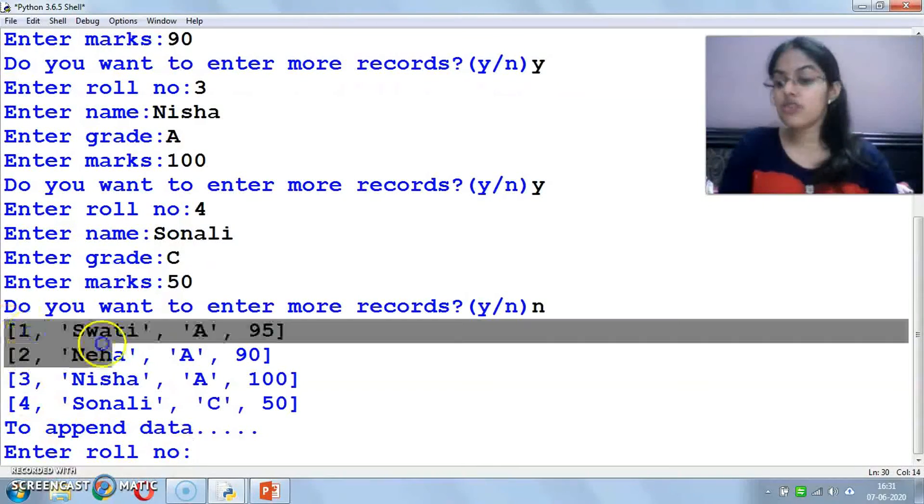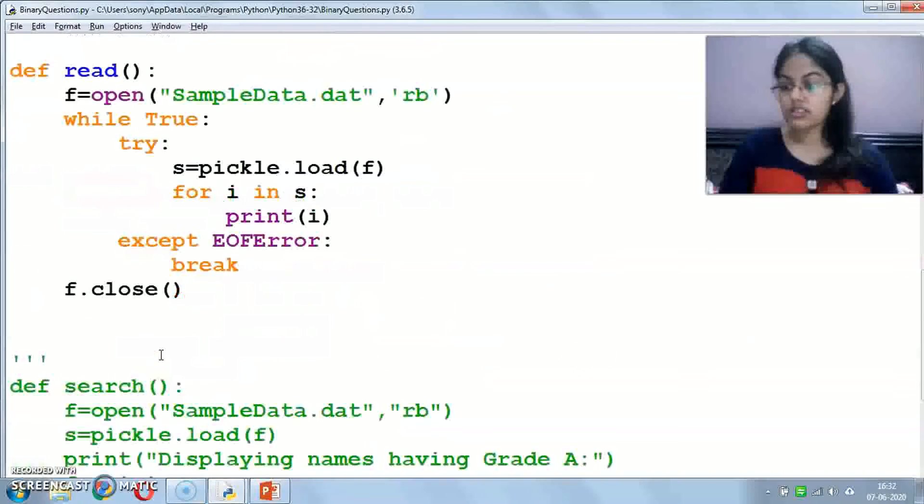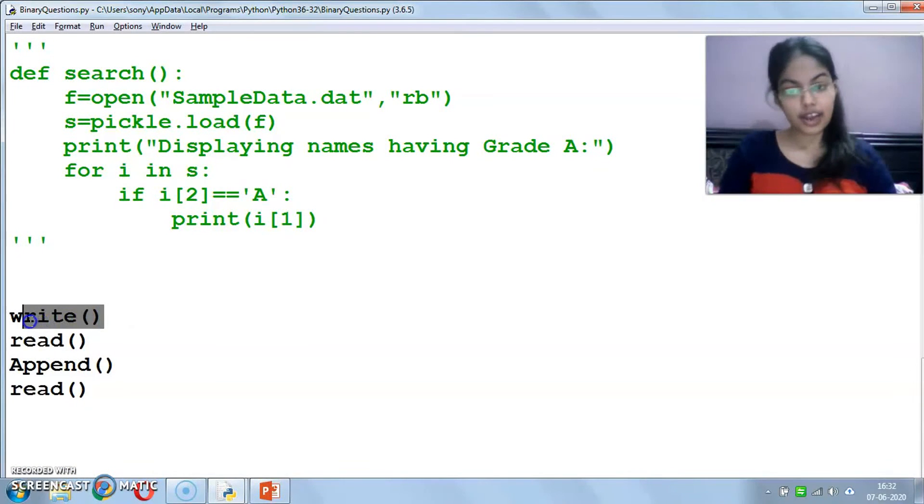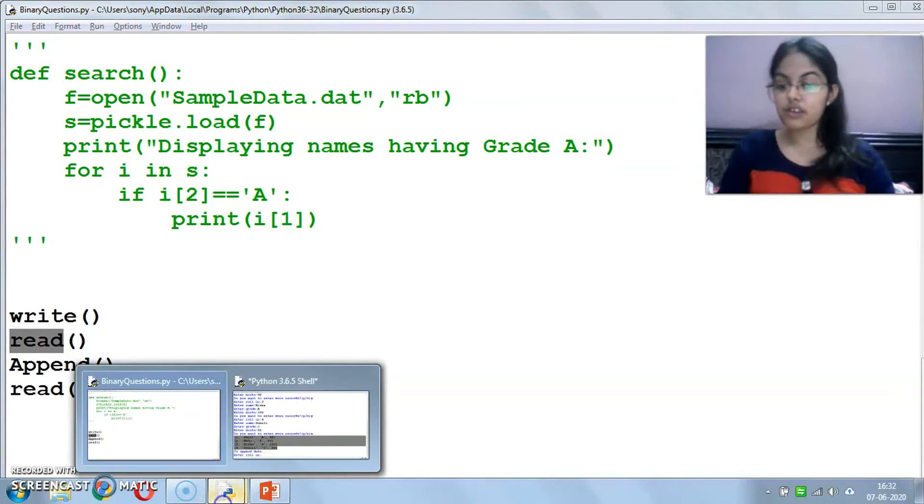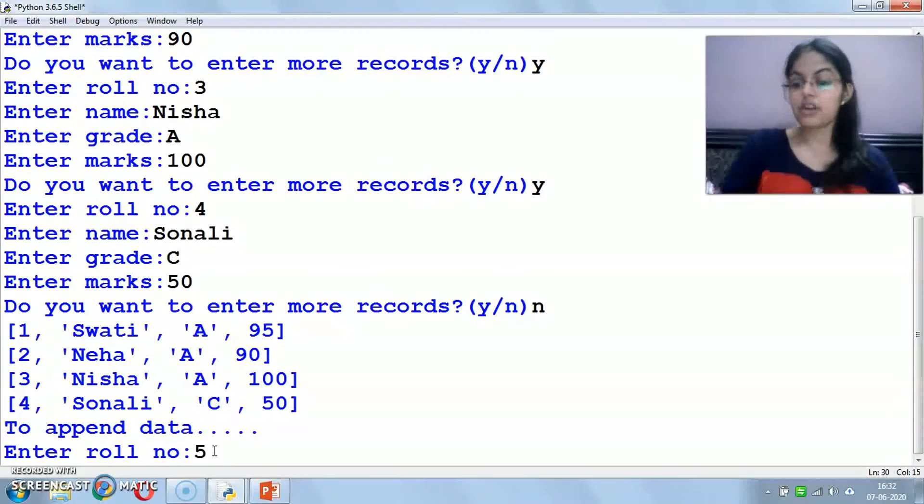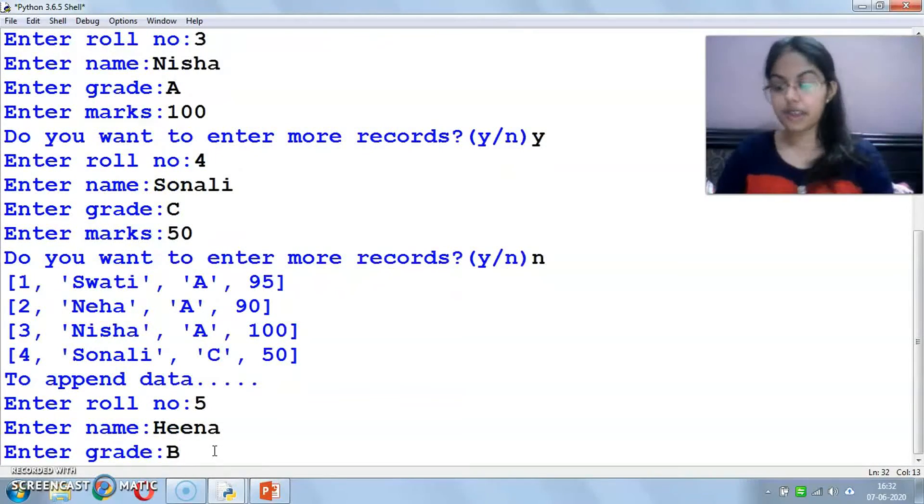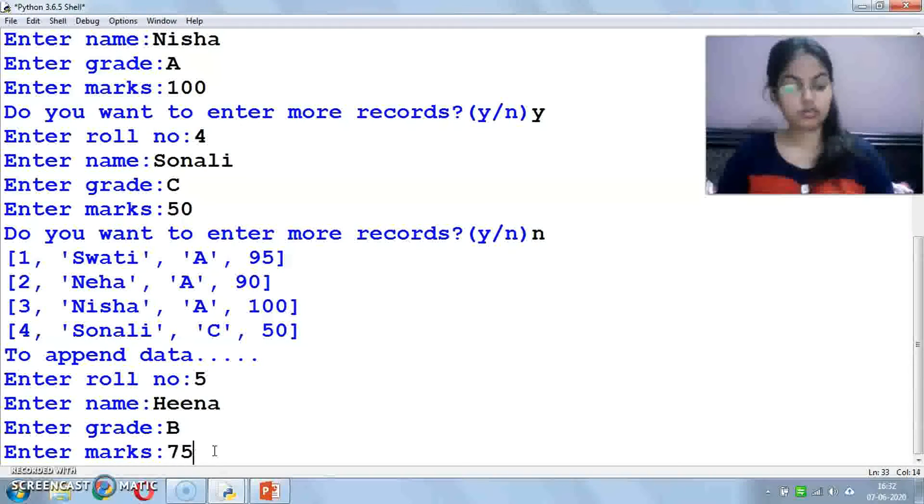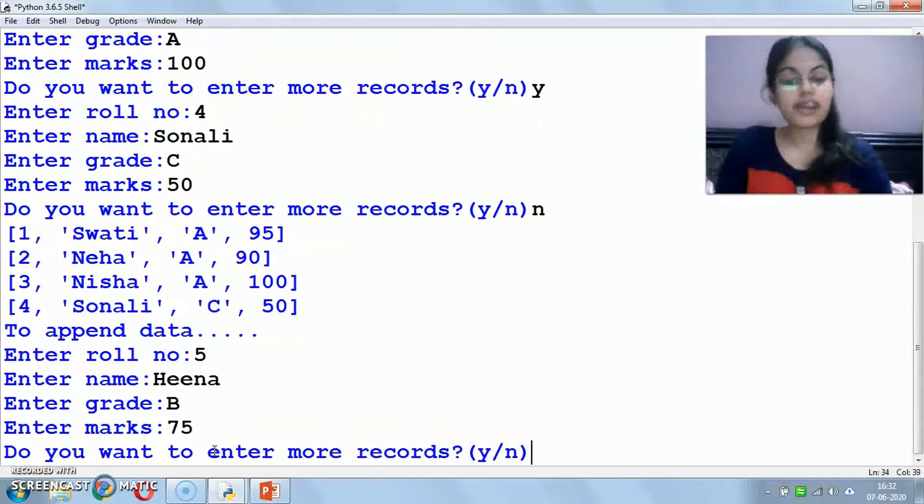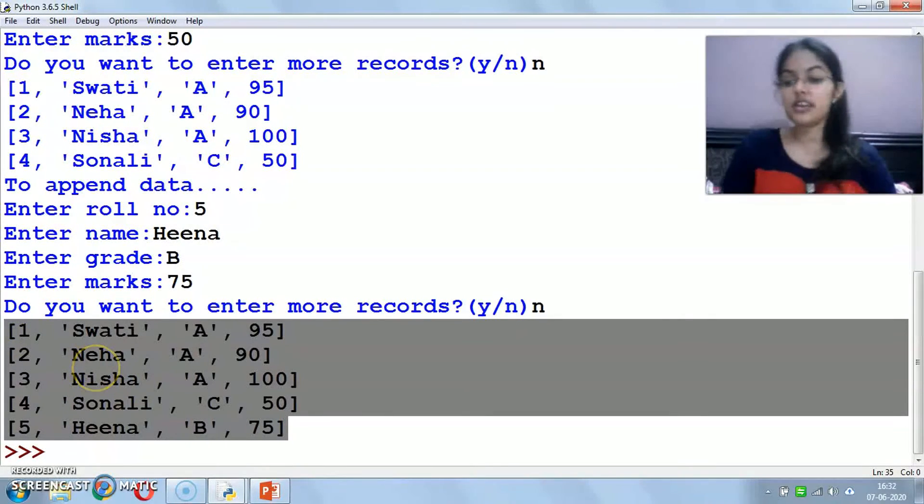Now I have called the append function. You can see here I have sent data and it has displayed after reading. Now I have called the append function again and if I have some data to append after 4, I have written roll number 5, name Hina, grade B, marks 75. Now I am not appending more records, I am pressing N. Now the read function has executed and given you 5 records.